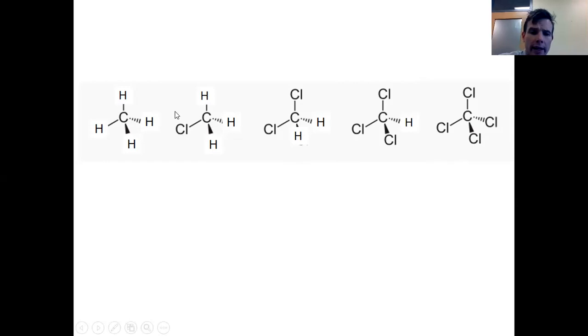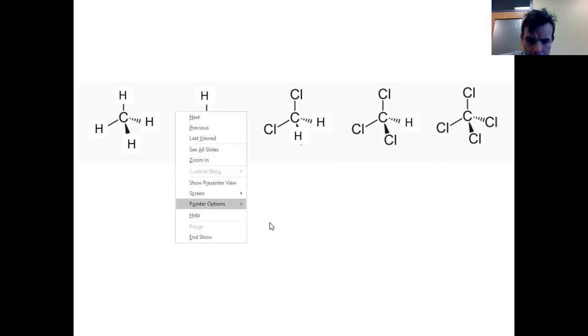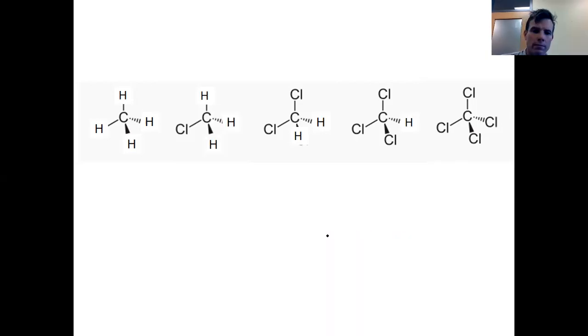And so in effect, electrons are being pulled from the carbon towards the chlorine. Because methane has no chlorines, it is clearly not polar. This molecule, and I can't think of its name right now, but with one chlorine, it clearly is polar.